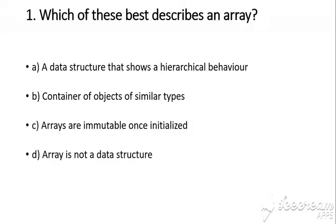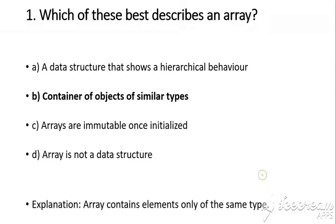Question number 1: Which of these best describes an array? The answer is B, that is a container of objects of similar types. Explanation: an array contains elements only of the same type.